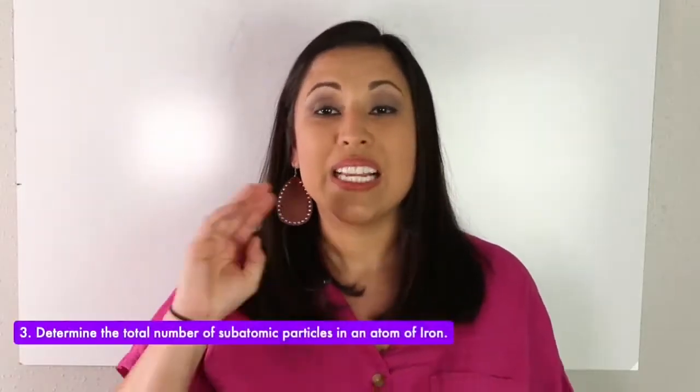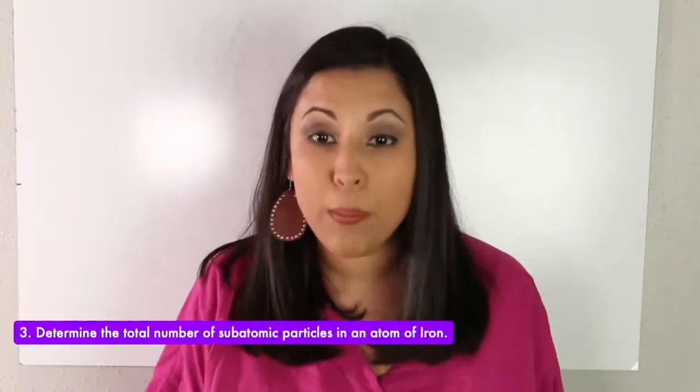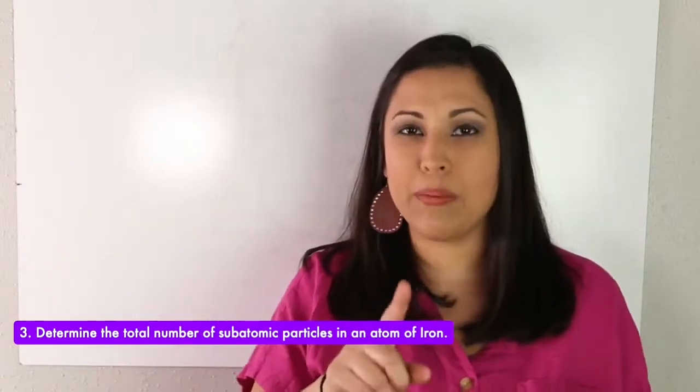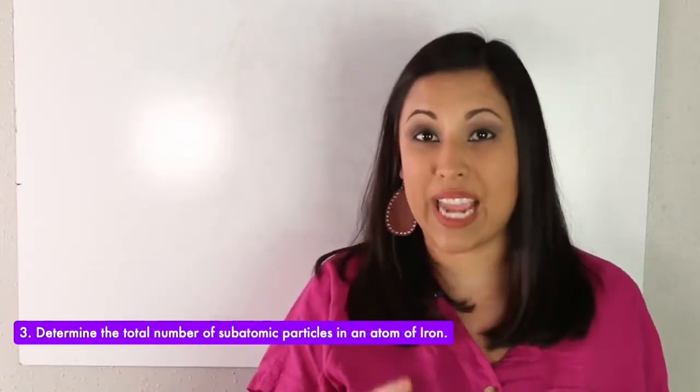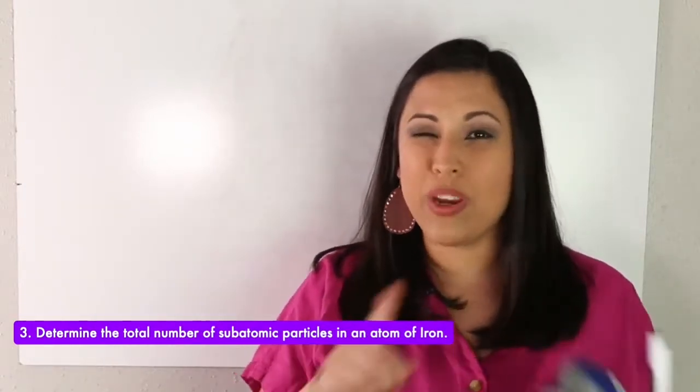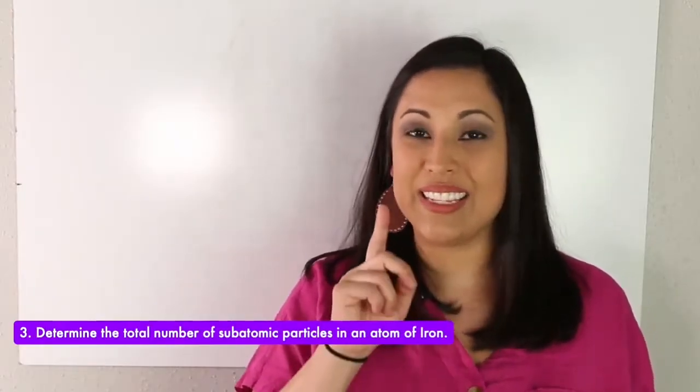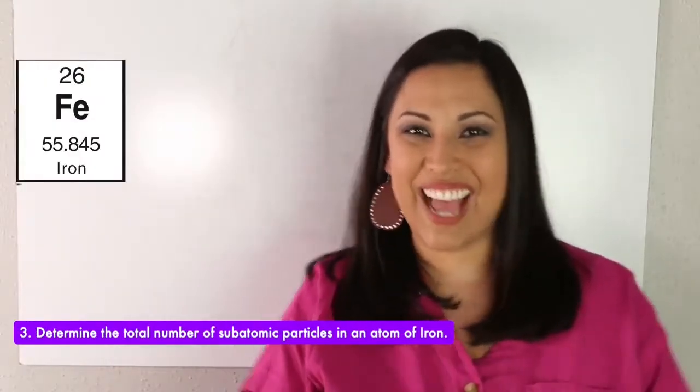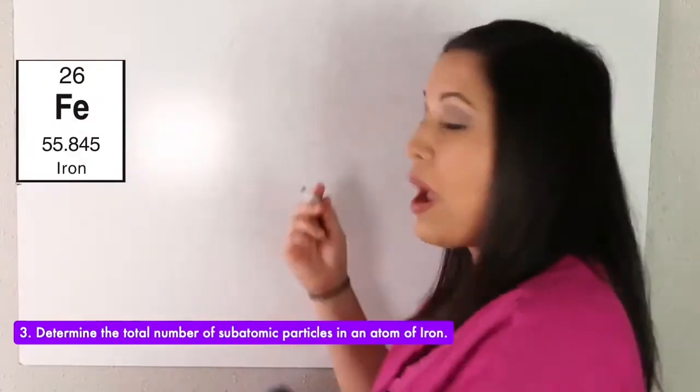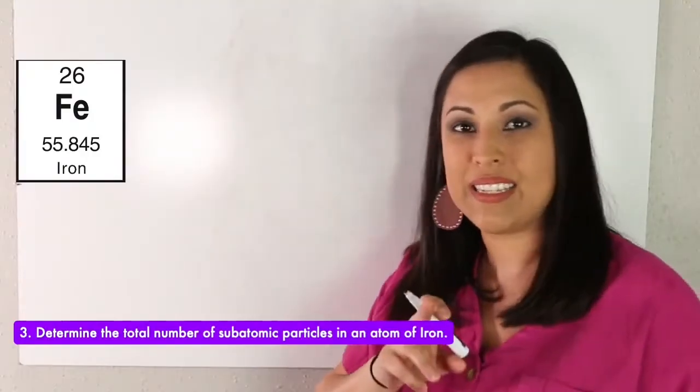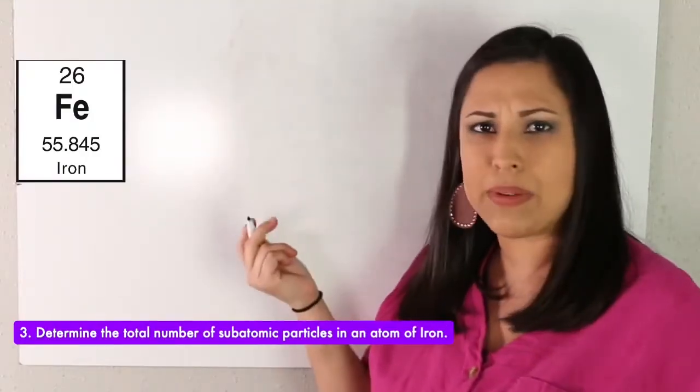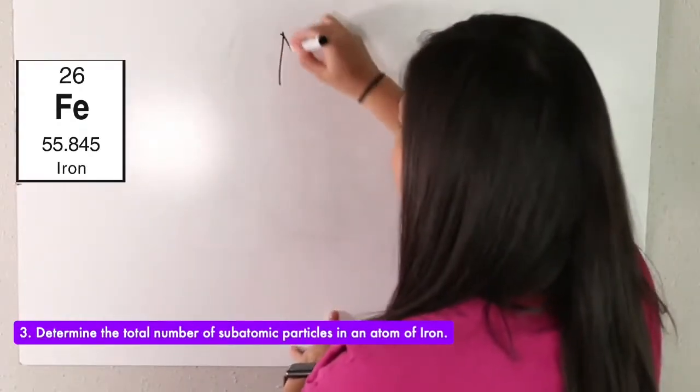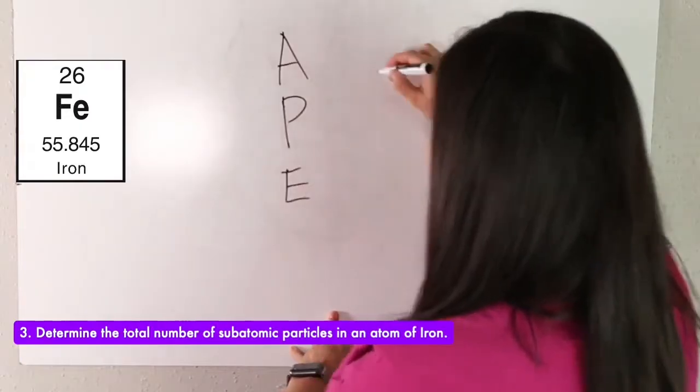All right, question number three. Determine the total number of subatomic particles in an atom of iron. So iron is a little tricky, but we need to find it on our periodic table. So if you find it, we notice our symbol is a little bit different. Then it's not going to be an I. It is, did you find it? Fe is iron. So it has an atomic number of 26. And what are we going to do to find our subatomic particles? Ape man to the rescue.